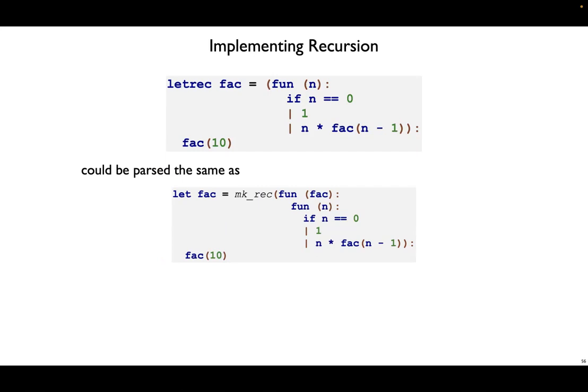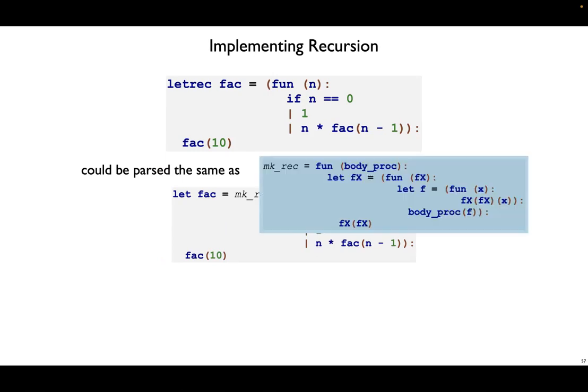Since this is a lecture on encodings, it's worth pointing out that makeRec is simply an encoding. This definition happens to use let, but we don't need that. The let is not essential. It further unfolds to a bunch of functions. At the end of the day, everything we have here is functions.